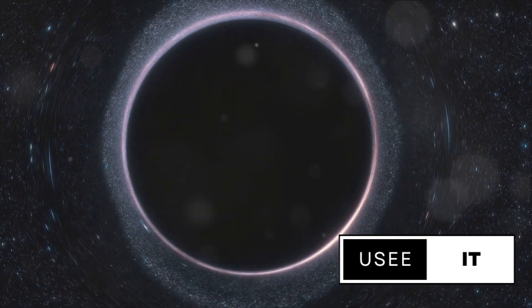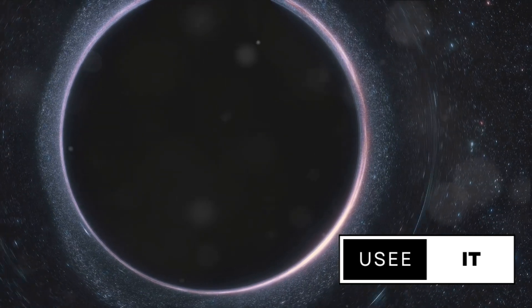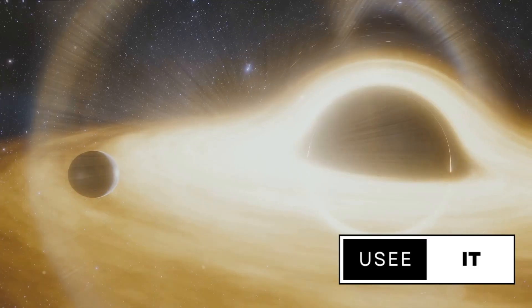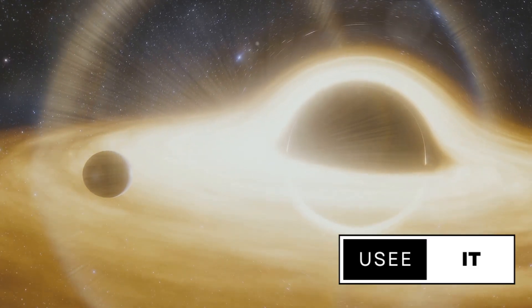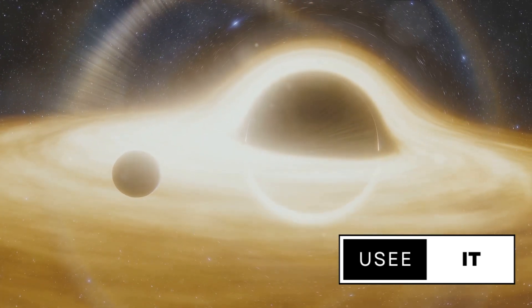Even light, the fastest thing in the universe, cannot escape once it crosses the event horizon, the point of no return around a black hole. These are the cosmic predators, lurking in the shadows, consuming everything that dares to venture too close.